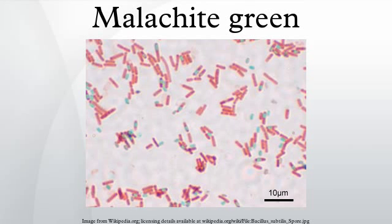Malachite green is an organic compound that is used as a dyestuff and has emerged as a controversial antimicrobial used in aquaculture. Malachite green is traditionally used as a dye for materials such as silk, leather, and paper. Although called malachite green, this dye is not prepared from the mineral malachite — the name just comes from the similarity of color.